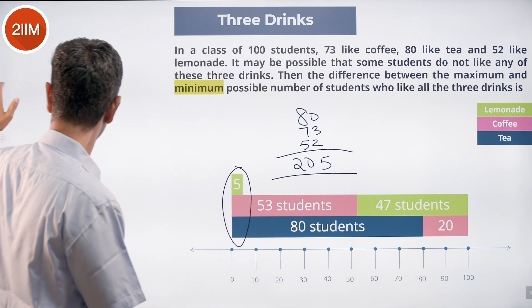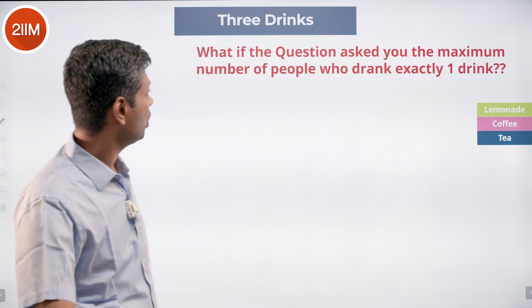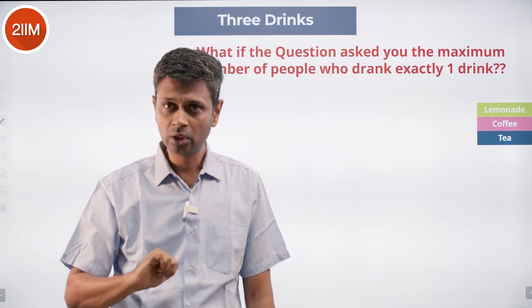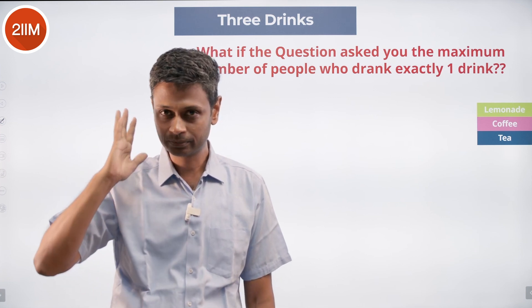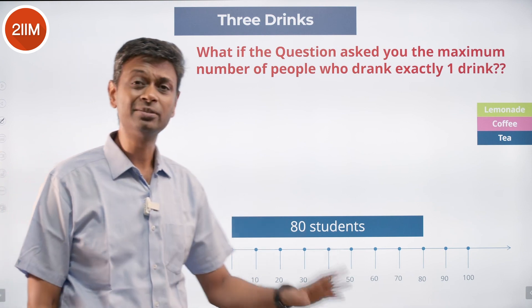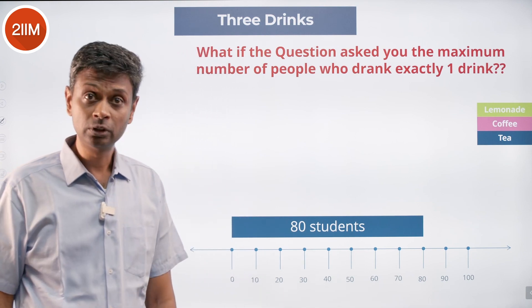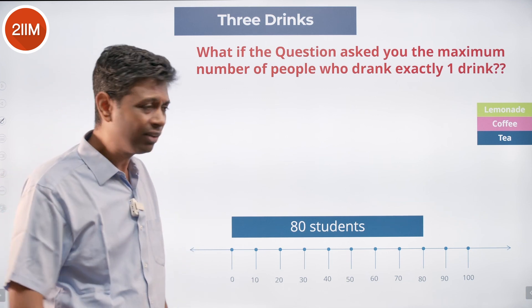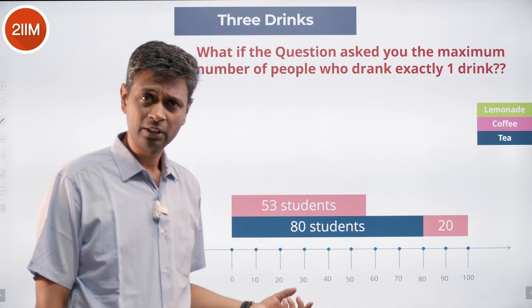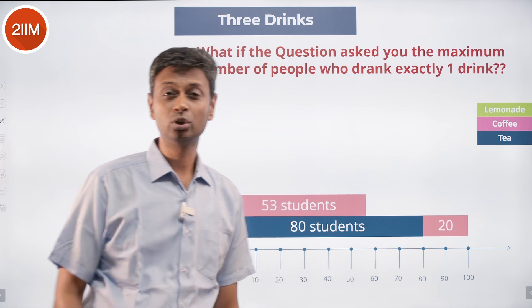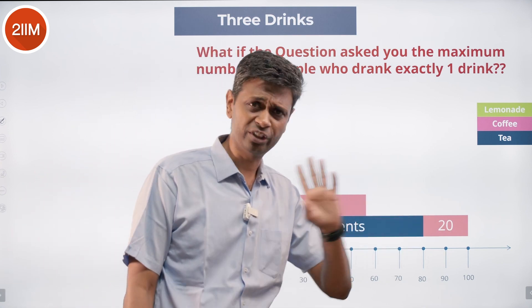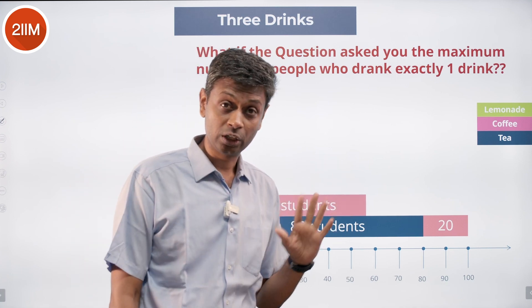Now for a variant: what is the maximum number of people who drank exactly one drink — only tea, only coffee, or only lemonade? Same visual idea. Put the 80 tea drinkers on the stack. To maximize people drinking exactly one drink, accommodate coffee drinkers separately with no overlap. That gives 27 drinking only tea and 20 drinking only coffee — 47 people so far who have each drunk exactly one drink.